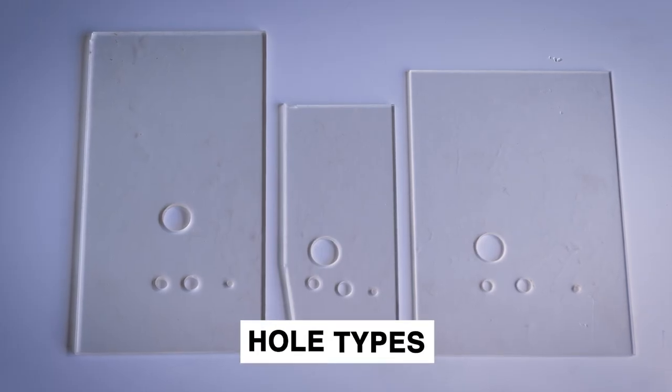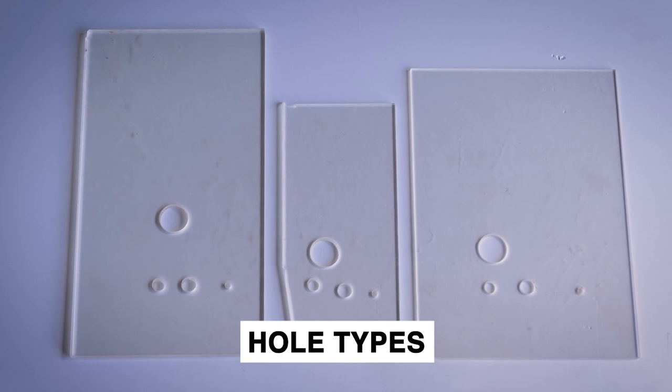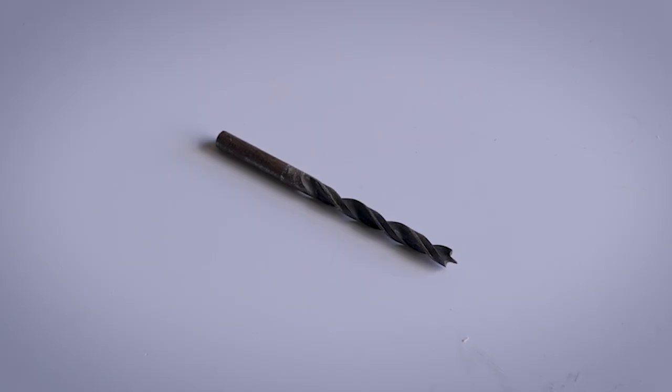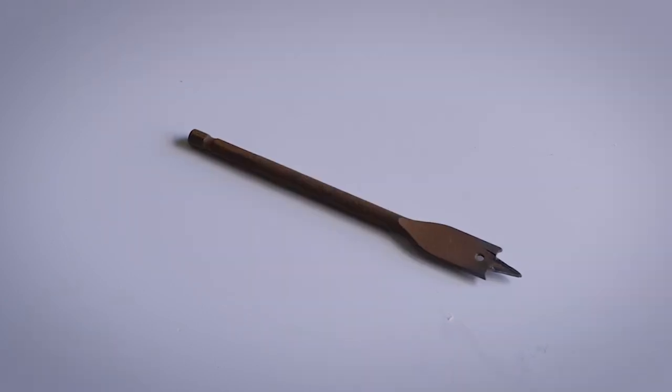This video will cover small, medium, and large holes and will show you what drill bits to use for each. When creating a small hole, you can use a twist drill bit. You can also use a paddle drill if you want a size closer to medium.